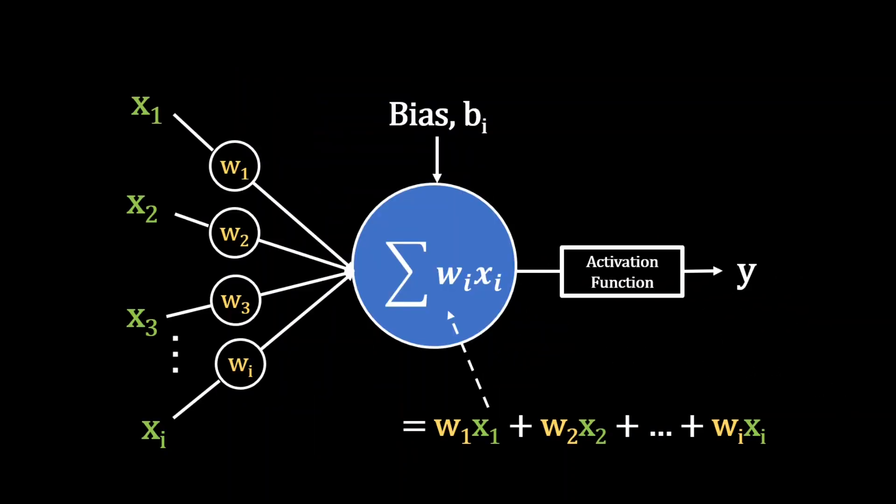We can stack multiple of these nodes side by side to form a layer. A layer can have as many nodes as you like, and these nodes can be arranged in different ways to make different types of layers that are specialized to do certain things. We'll cover this more shortly.